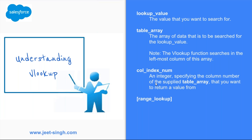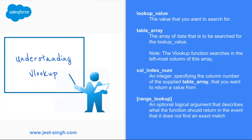Range lookup is the fourth and last parameter. Though this is an optional parameter, it's important to understand. It's an optional logical argument that describes what the function should return if it does not find an exact match. This is of a Boolean type — true or false. You can put a zero or one, zero being false and one being true.